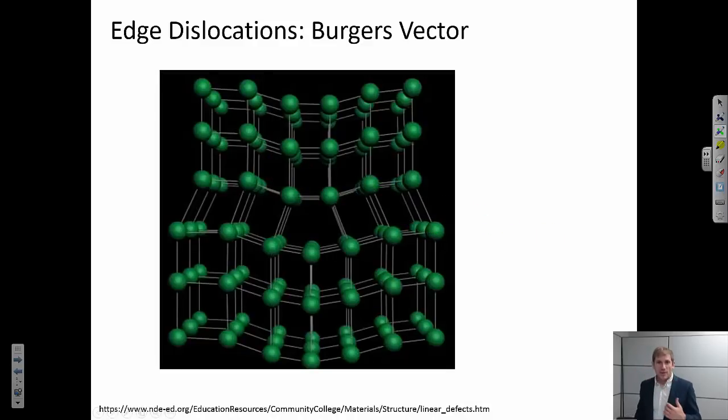Okay, so the first thing that we're going to talk about is the Burgers vector of an edge dislocation, and the Burgers vector is an important concept because it helps describe the character of a dislocation in a material. The whole idea is that if I drew a circuit in a perfect crystal lattice, let's focus up here for a second. If I go two to the right, two down, two to the left, and two up, then that will form a closed circuit.